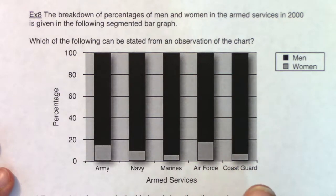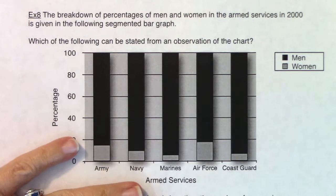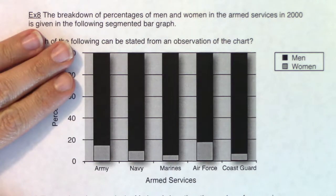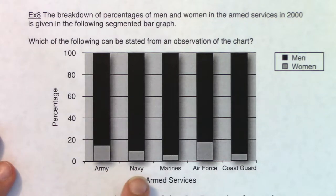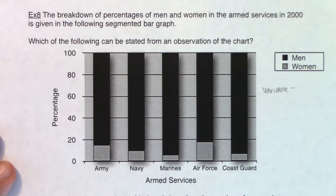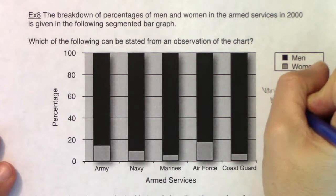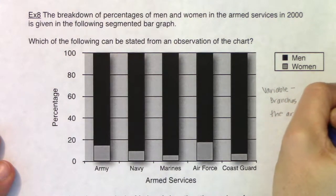This will be your first multiple choice question. On every midterm we'll have free response and multiple choice, so we want to practice those while we're in class together. Before we get going on the potential answers, let's look at this segmented bar chart and identify what the variable is. If we look at the x-axis, we can see that the branches of the armed services is the variable in this problem.